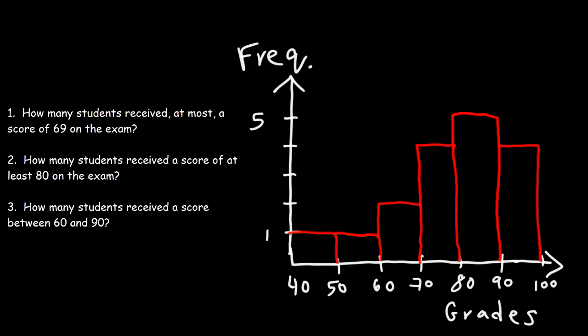So let's begin. Number one. How many students received, at most, a score of 69 on the exam? So what does that mean? At most, a score of 69. Is that more than 69, less than 69, doesn't include 69? What would you say? So let's write an inequality. At most means the maximum score is 69. So using S for the score, S has to be less than or equal to 69. It can be up to 69 or less, but not more than 69.